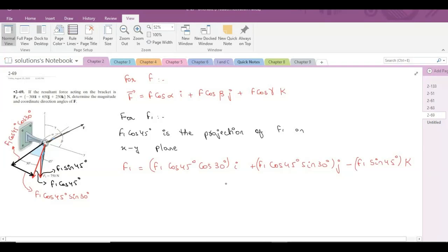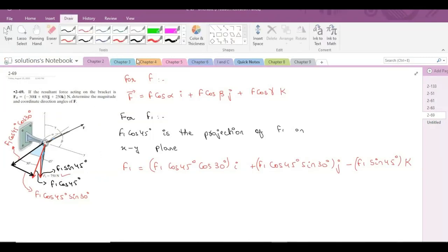Now we know that the value of F1 given to us in the problem is 750 Newtons, so F1 is 750 Newtons magnitude.